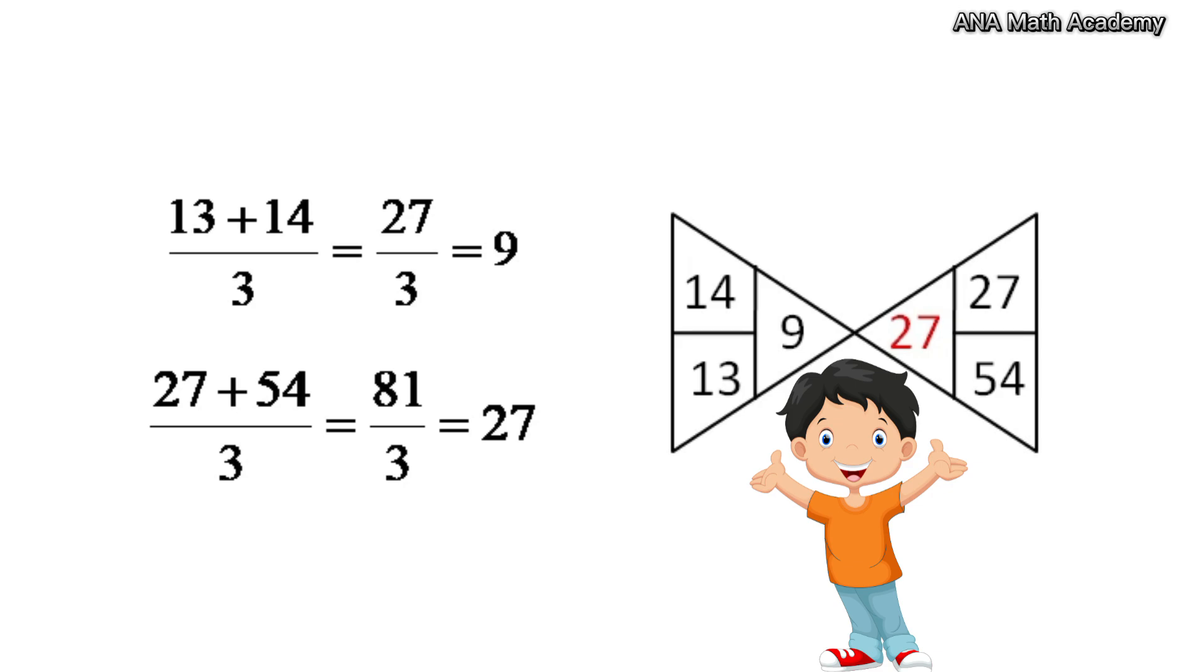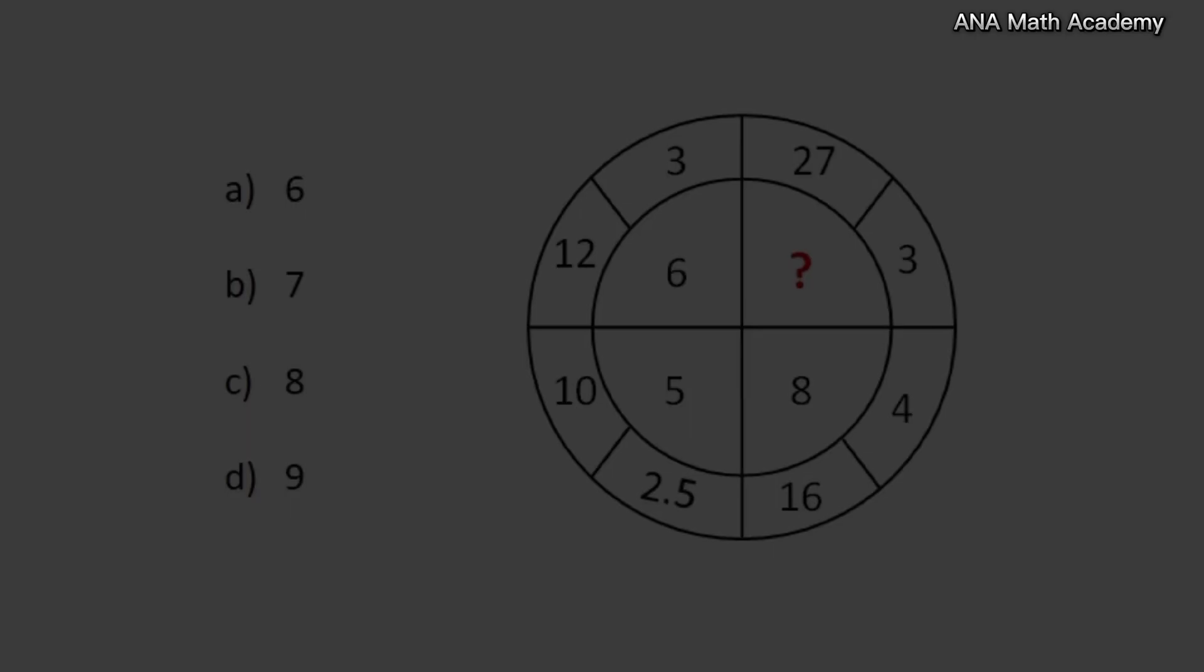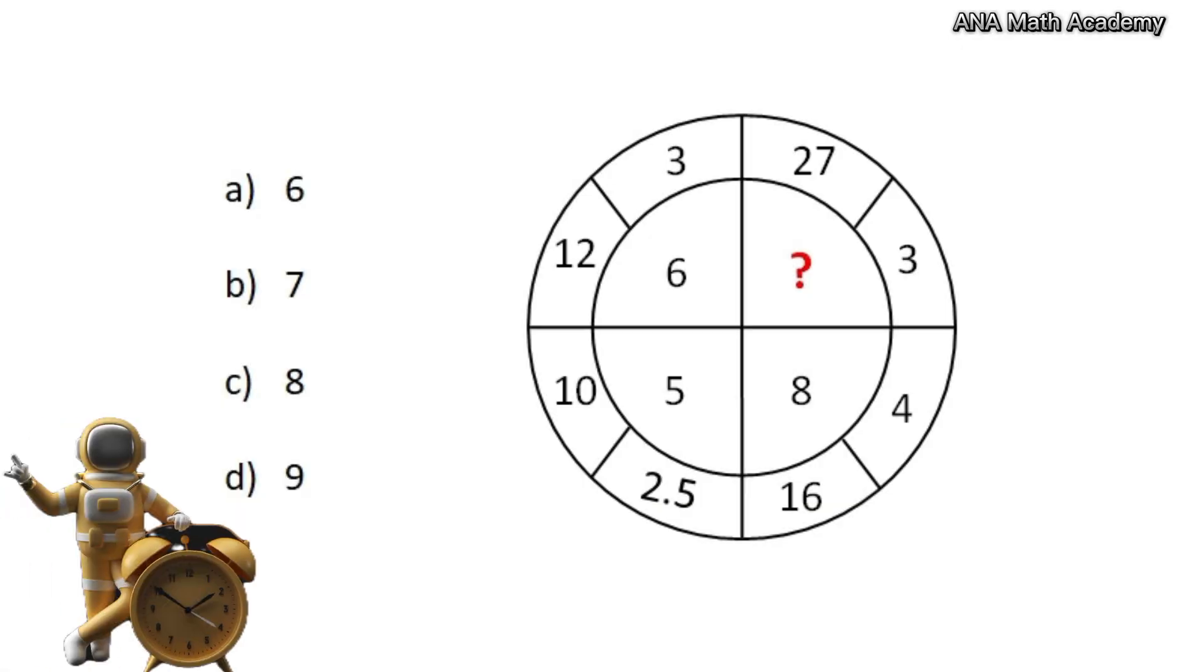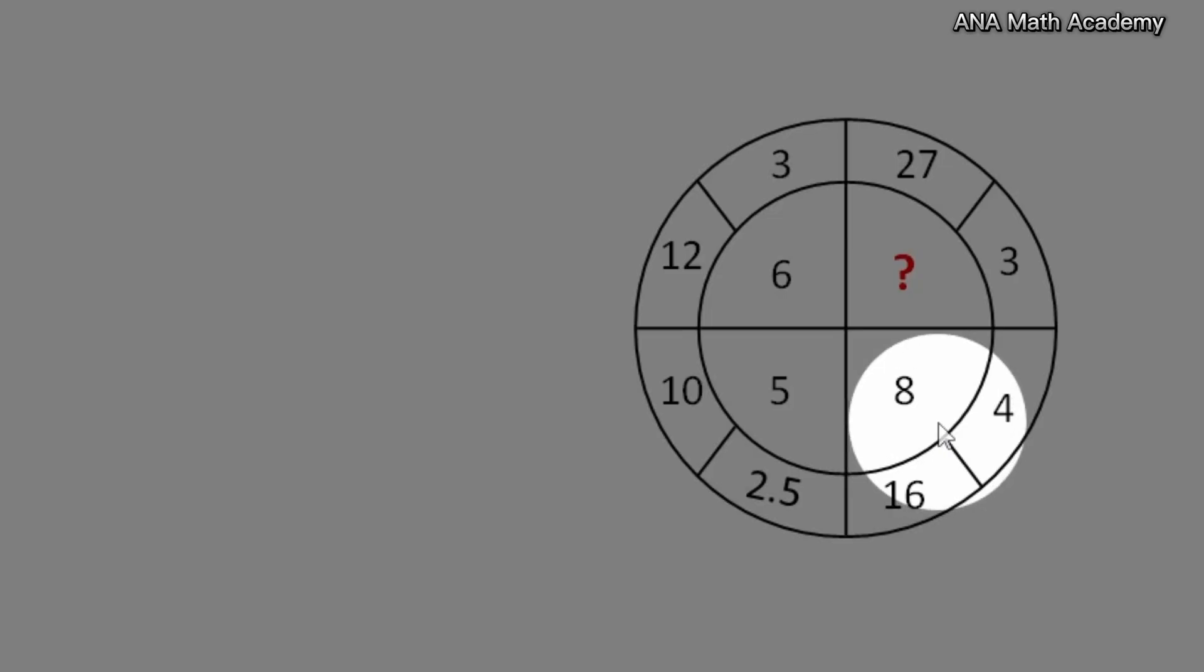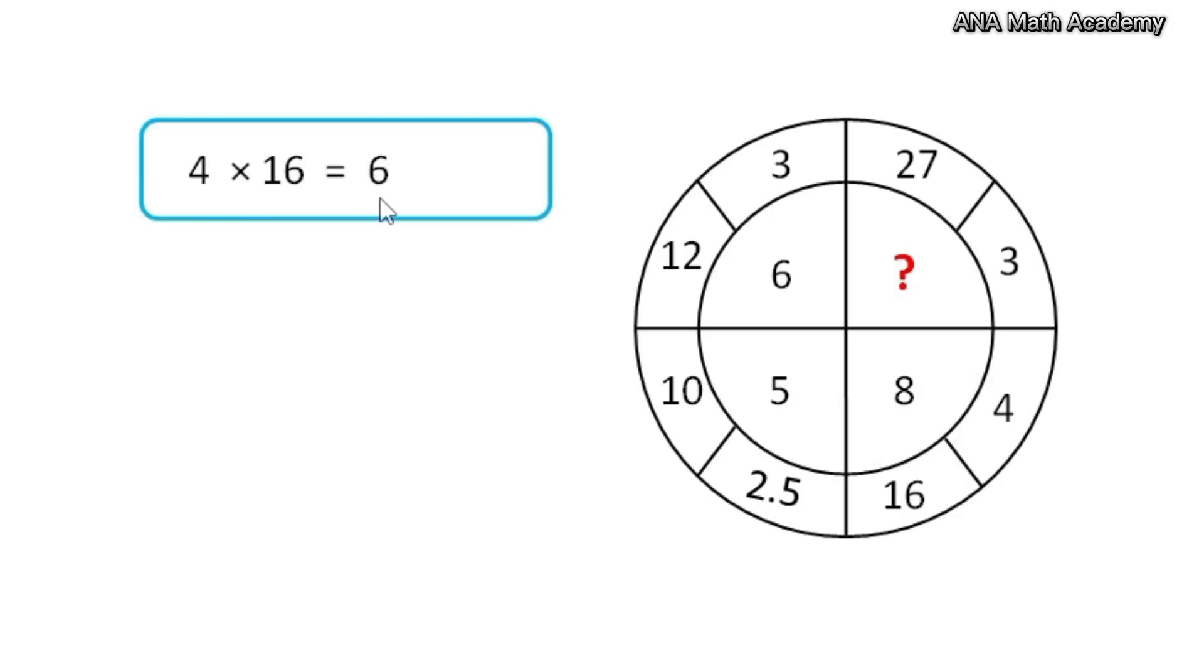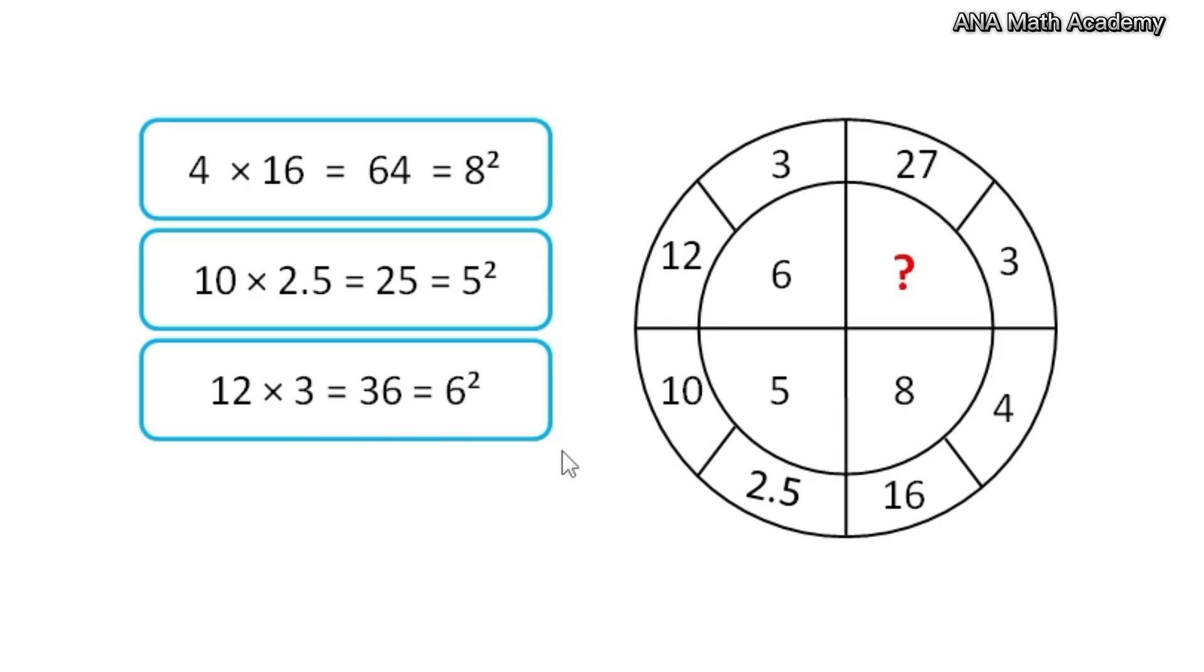The next question is on your screen, try to solve it. Did you get the answer? Now let's see the solution. Look at this part: if we multiply 4 and 16, we get 64, which is square of 8. We will follow the same process in every part. 27 times 3 equals 81, and everyone knows 81 is square of 9. So our answer is 9.